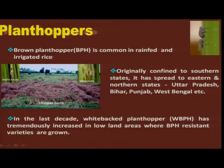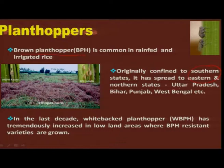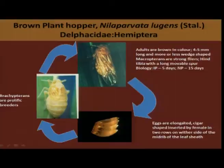The next group of insects is the plant hoppers — these are sucking pests known as brown plant hopper, which is very common both in rain fed paddy farming as well as in irrigated areas. Originally, these plant hoppers were very much restricted to southern India, but since one decade their appearance is also seen in eastern as well as northern states, particularly in Uttar Pradesh, West Bengal, Bihar and Punjab. With the growing of high yielding varieties, the white backed plant hopper, another sister species of brown plant hopper, started occurring in a severe form.